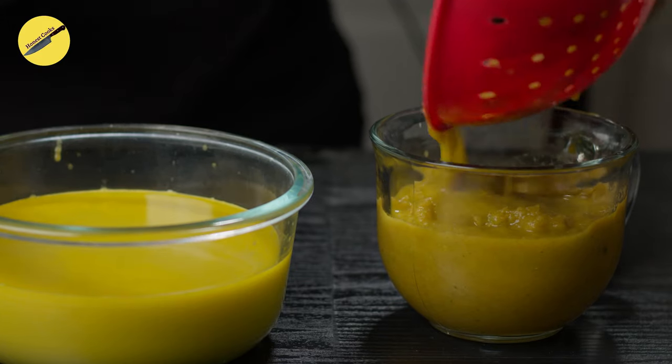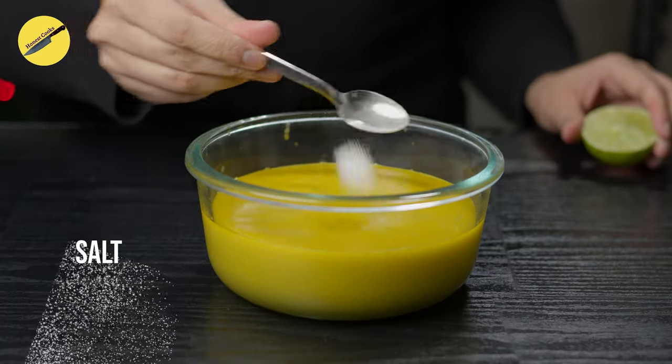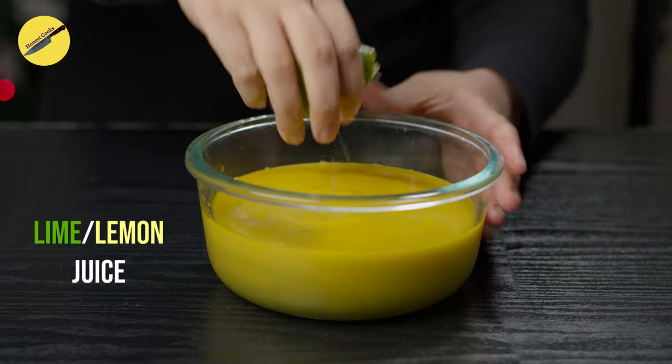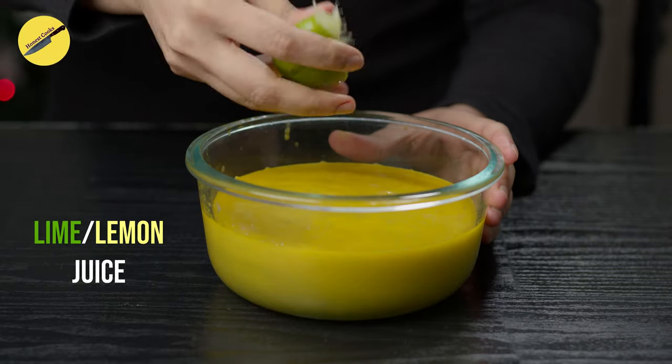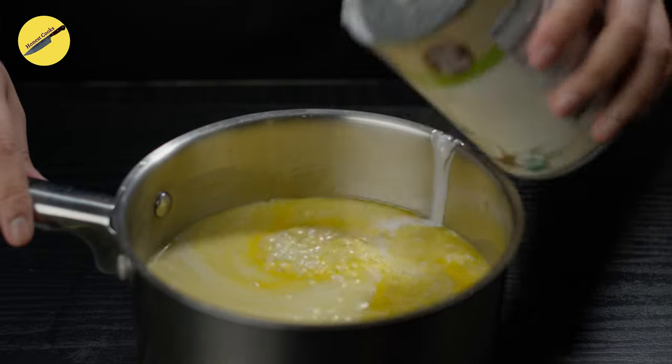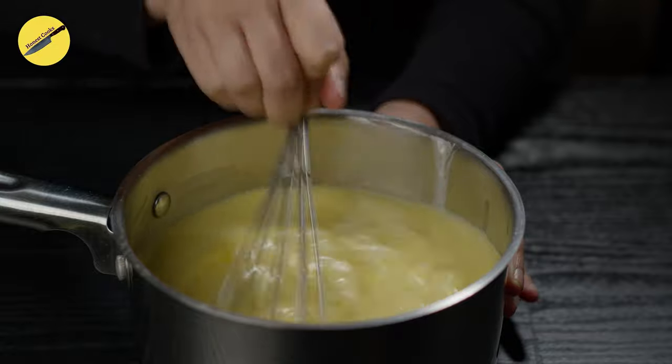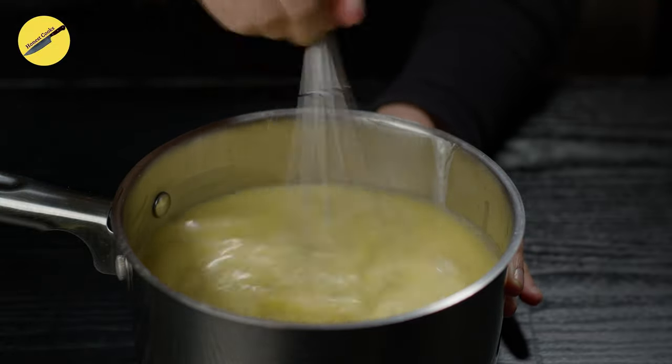After straining the soup, we'll discard the fibers and to the leftover base, we'll add in some salt and a splash of either lime or lemon juice. Transfer your soup base to a simmering pot and add in the coconut milk. Give it a good whisk away from the flame and when everything is well combined, we'll bring this to a boil.